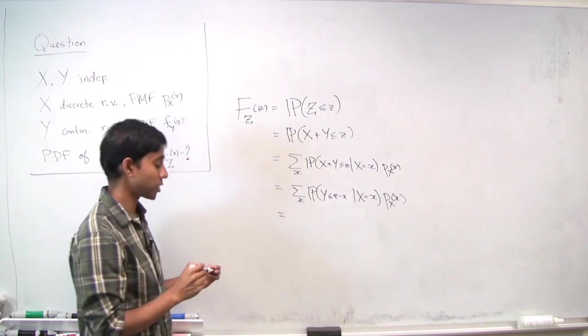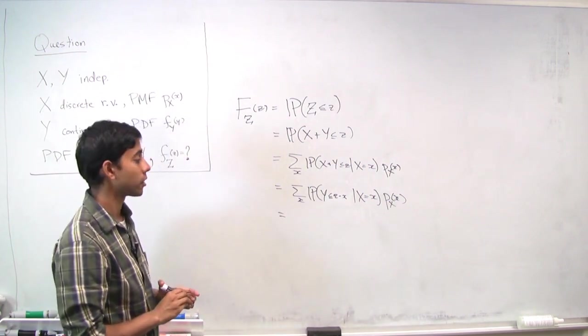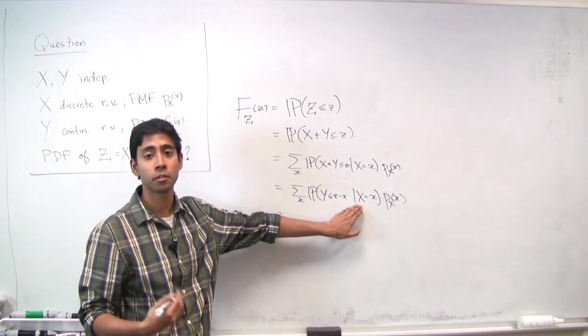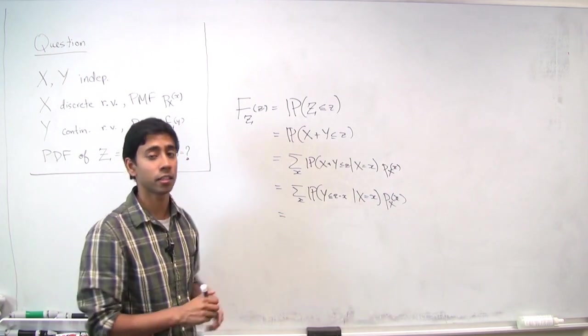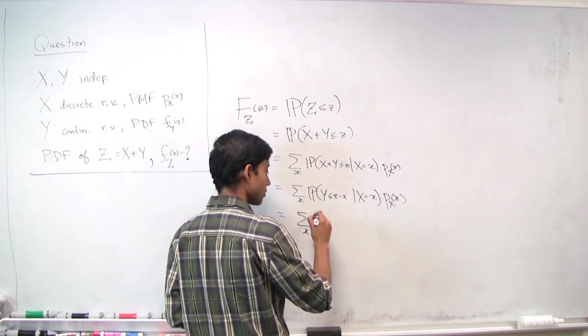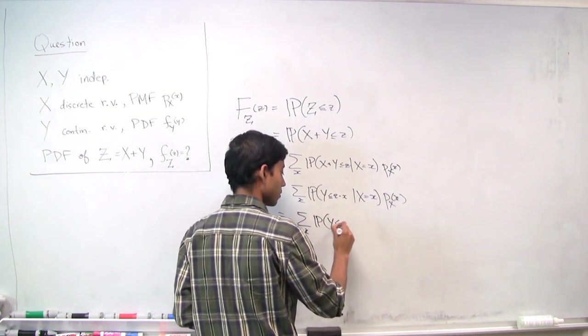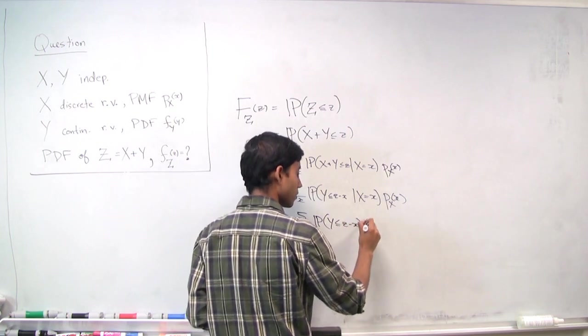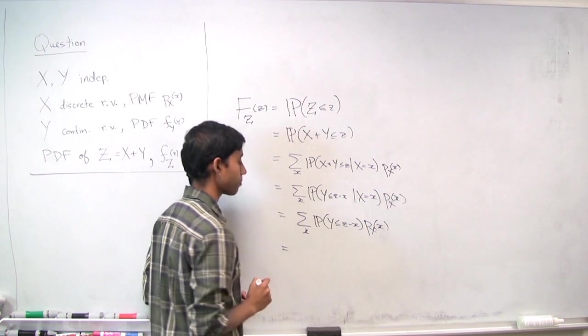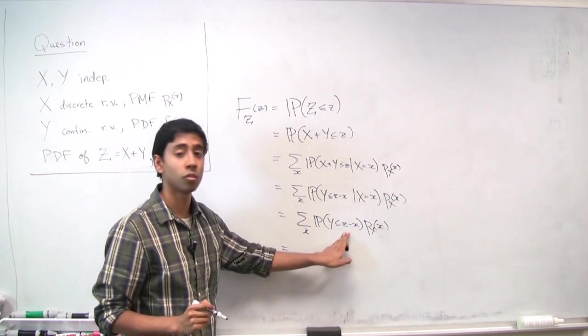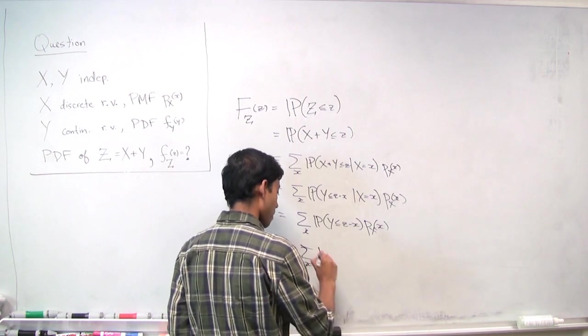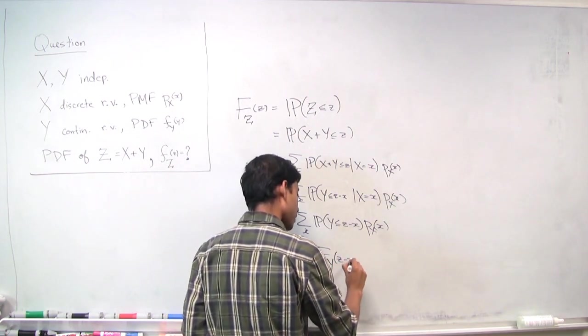Now remember that x and y are independent. So telling us something about x shouldn't change our beliefs about y. So in this case, we can actually drop the conditioning. And this is exactly the CDF of y evaluated at z minus x.